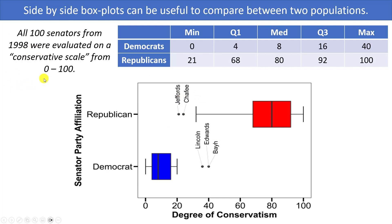It's interesting to note that some of the most conservative Democrats were actually more conservative than the least conservative Republicans, at least in 1998. The scale may have been based on voting records or a questionnaire. Side-by-side box plots are a common way to compare between two populations. That's everything for this section — hopefully you found it useful, and I'll see you in the next video.